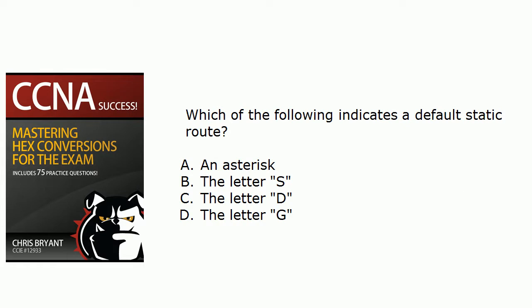Which of these indicates a default static route: an asterisk, the letter S, the letter D, or the letter G? There are a lot of codes you've got to learn when you're just getting started with this stuff.